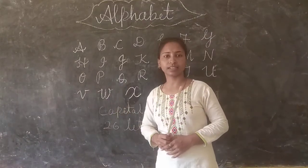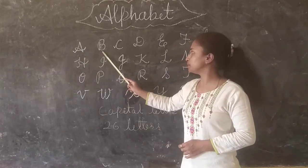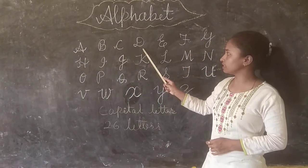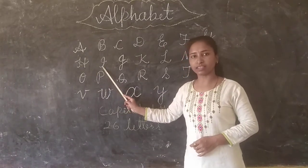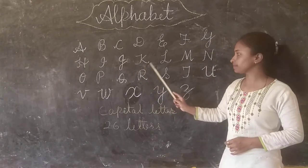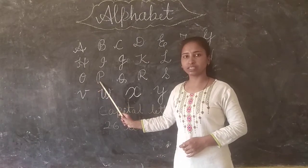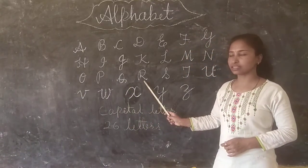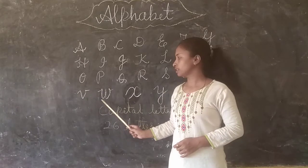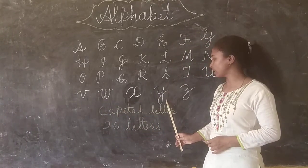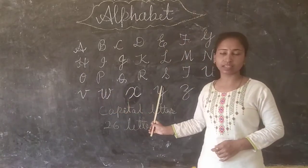So these are letters called alphabet. Once again we will read: A, B, C, D, E, F, G, H, I, J, K, L, M, N, O, P, Q, R, S, T, U, V, W, X, Y, Z. So these alphabet letters from A to Z are called alphabet.